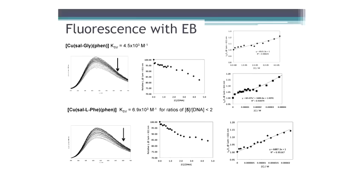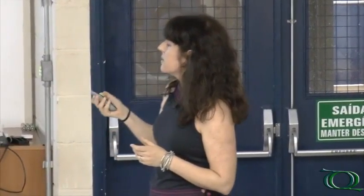We also did some fluorescence studies with ethidium bromide. Ethidium bromide is a very good intercalator — it intercalates in the middle of the DNA base pairs, and when intercalated, its fluorescence is protected from quenching. If you have another compound that is able to displace ethidium bromide from the DNA, ethidium bromide goes into solution where its fluorescence is quenched. So fluorescence quenching means there is some interaction of the complex with DNA.